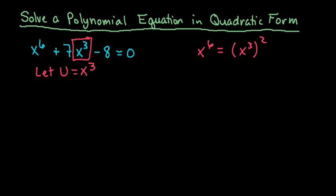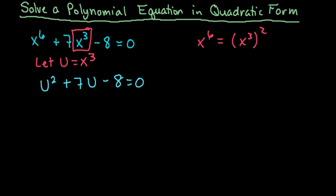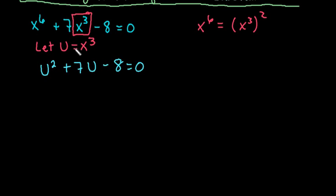So I can rewrite this as u squared plus 7u minus 8 equals 0. And now what we simply have is a quadratic equation. So with this, what we did was we just simplified it to a quadratic equation where we can rewrite it or we can factor it.